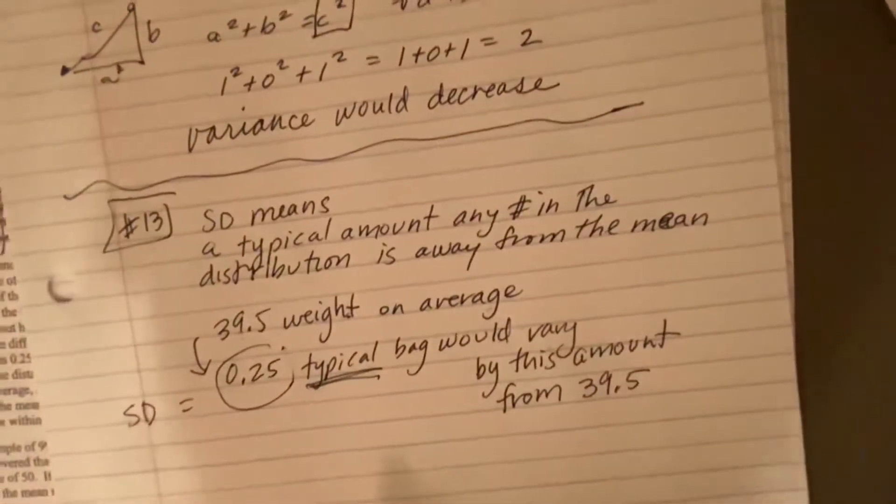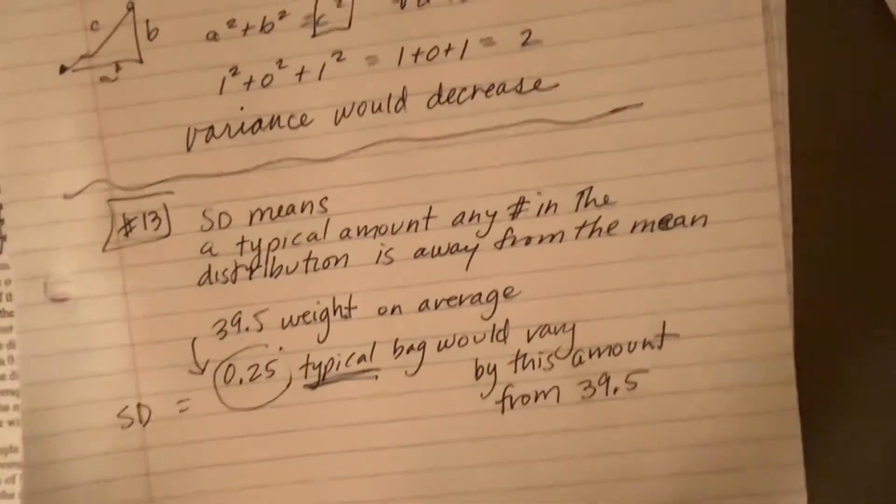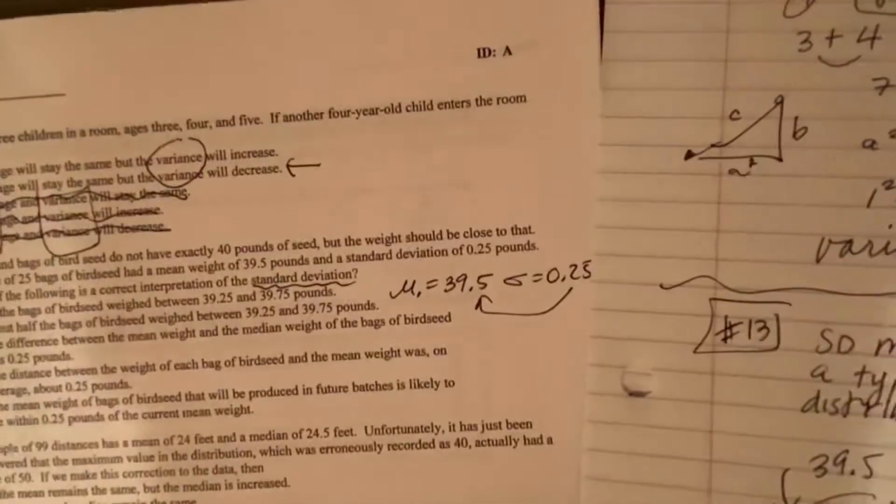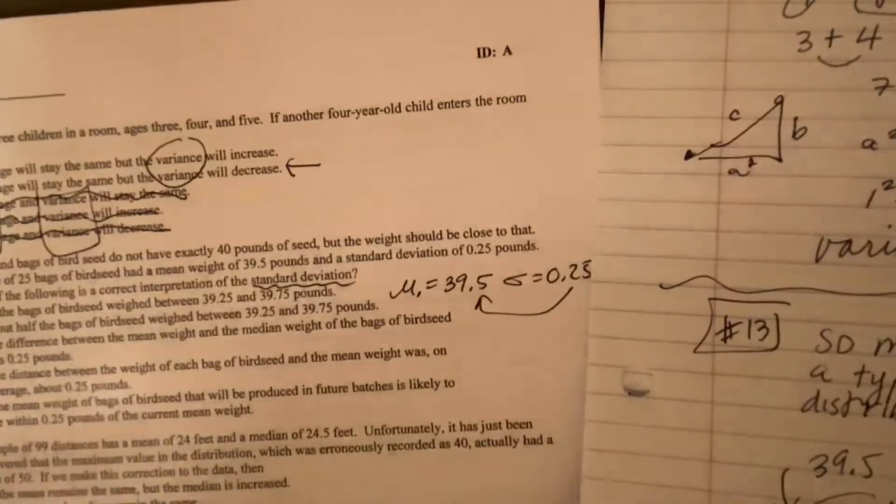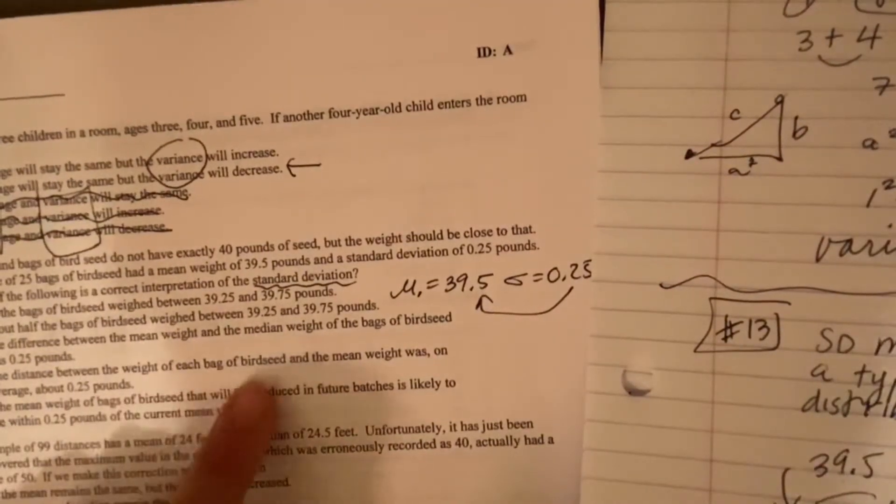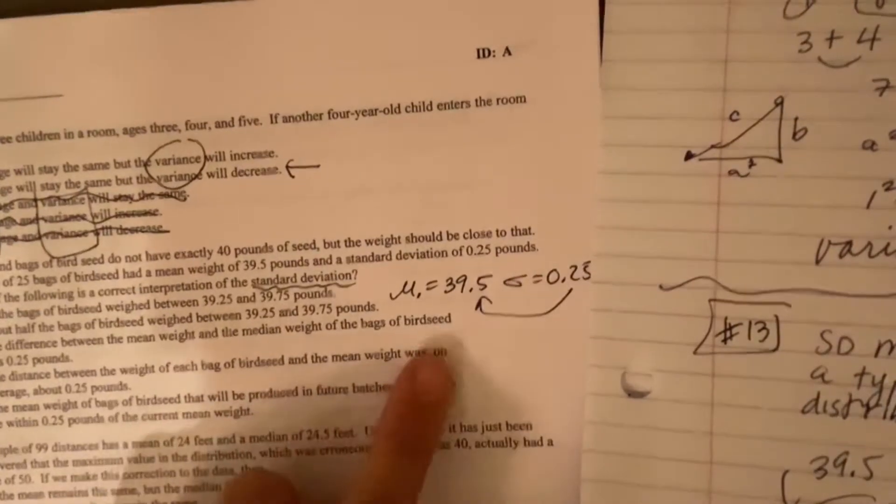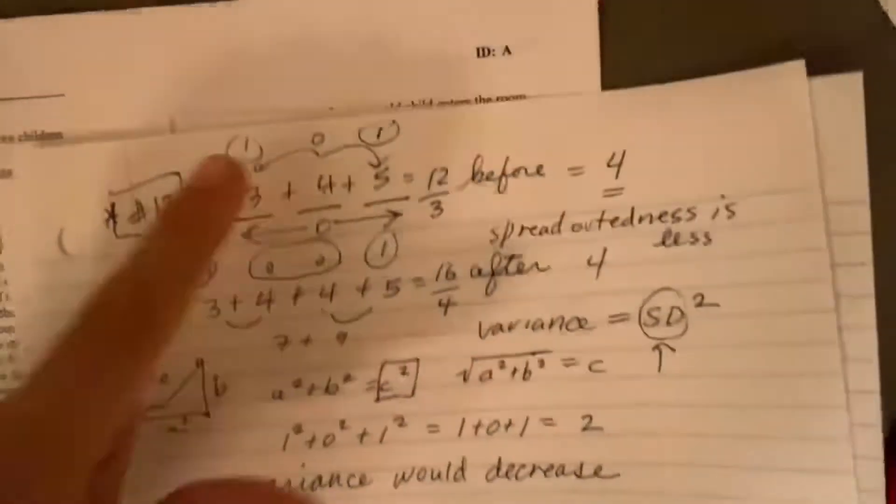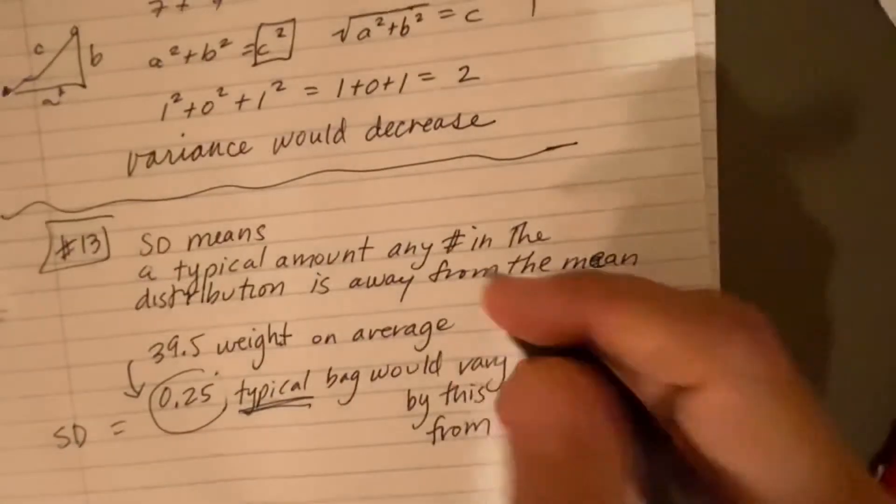Now we have to pick which one sounds like that. So we kind of read through our choices here. And it looks like D, the distance between the weight of each bag and the birdseed and the mean weight was on average 0.25.